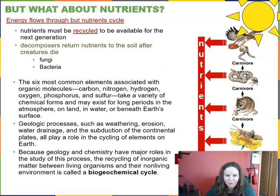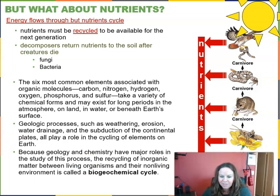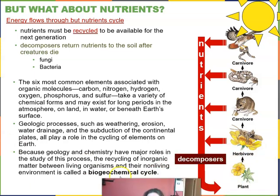We can see PCB concentrations increasing from phytoplankton and zebra mussels up to the apex predator, the walleye — higher trophic levels accumulate more PCBs than lower ones. If you eat walleye, you're the next level up and consuming 100% of those PCBs. Energy flows through an ecosystem, but nutrients cycle — nutrients need to be recycled to be available for the next generation.